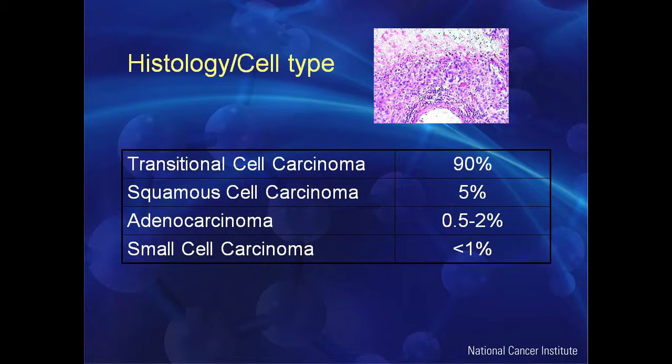Bladder cancer is predominantly a transitional cell type — 90% of bladder tumors are transitional cell carcinoma. But there are other cell types too: squamous cell carcinoma, adenocarcinoma, and small cell carcinoma, which are all managed differently with different chemotherapies and surgeries. The goal would be to treat cancers not by cell type, but by their mutations and genomic profiles.